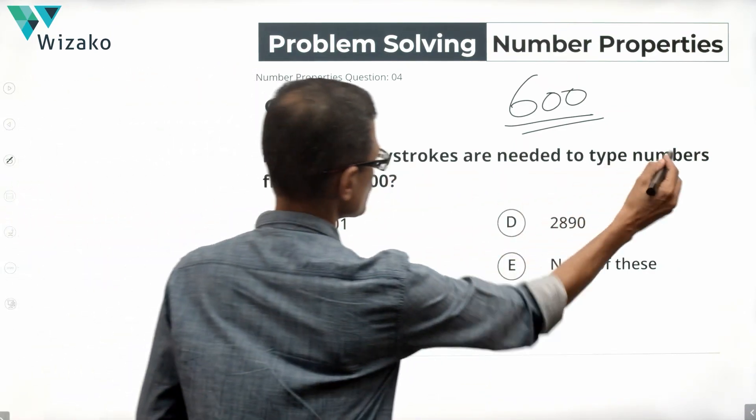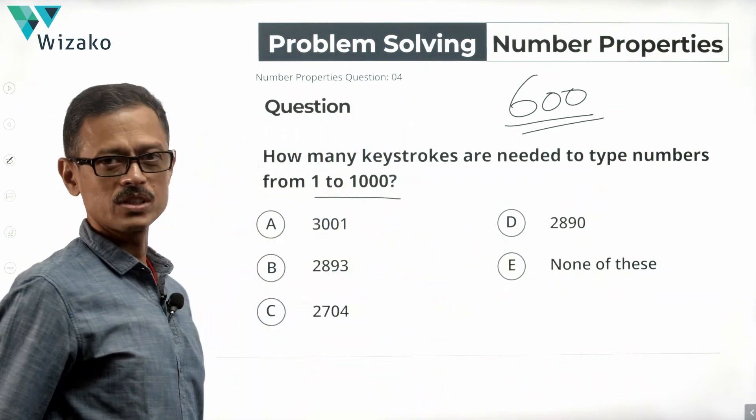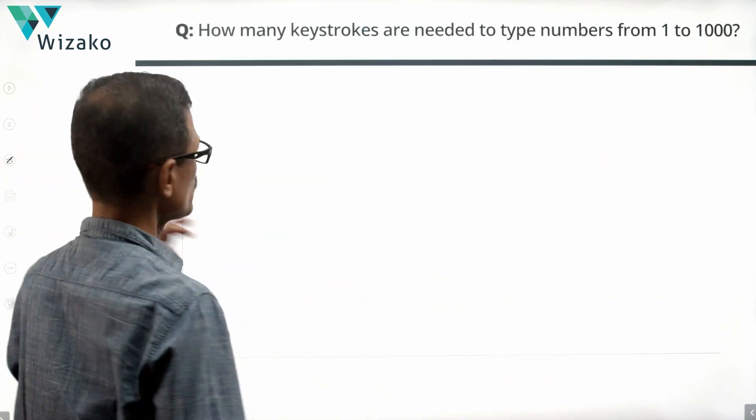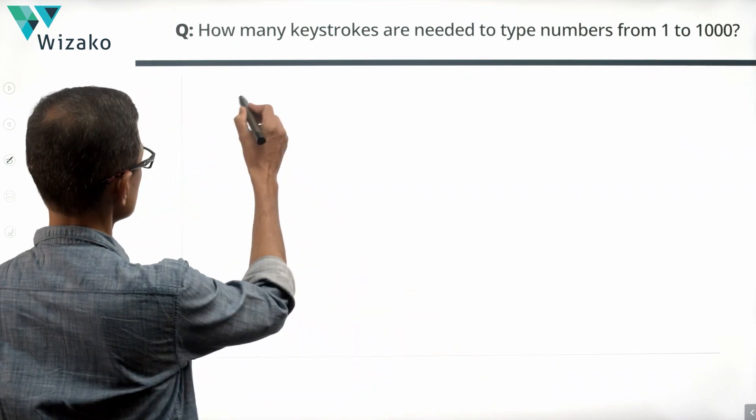How many keystrokes are needed to type numbers from 1 to 1000 is what the question is. So when you're typing from 1 to 1000, let's just list it down.